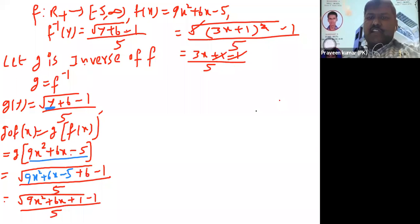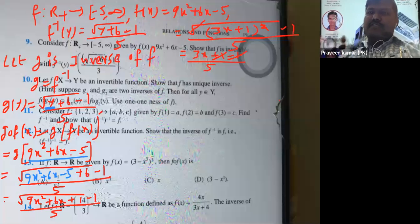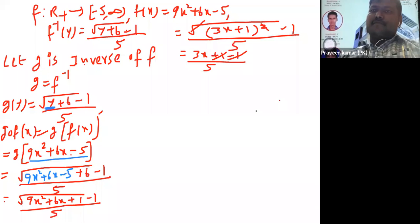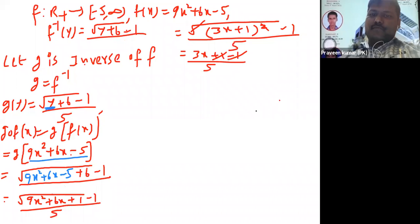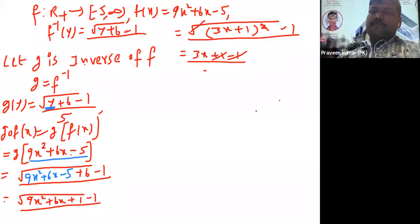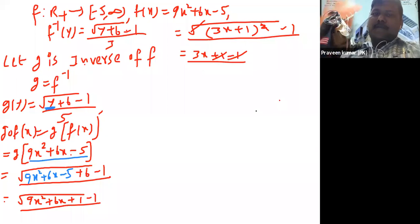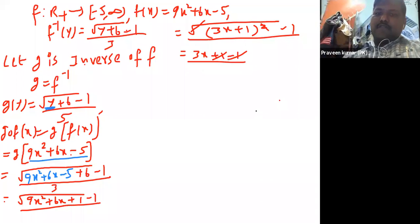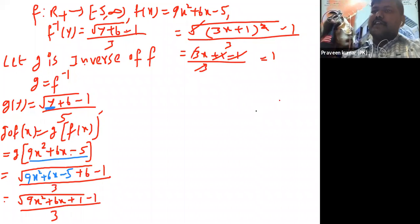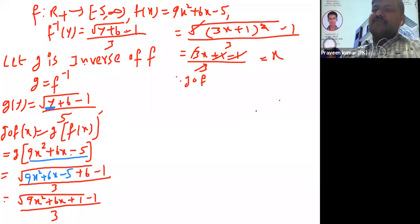Wait — the denominator is 3, not 5. So the denominator is 3. The 3 in the numerator and 3 in the denominator cancel, and the 1 and 1 cancel, giving x. Therefore g circle f is equal to x.